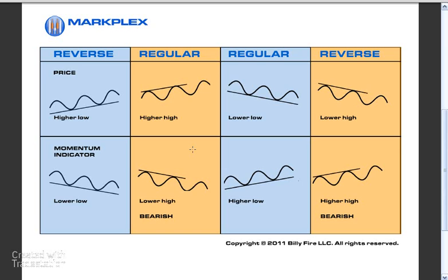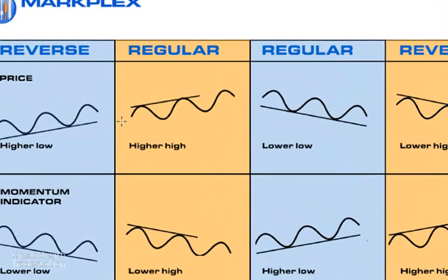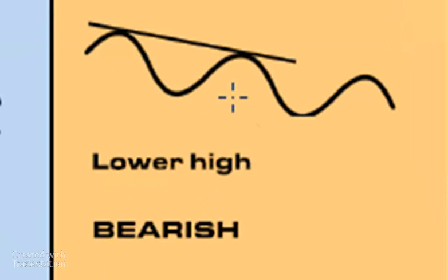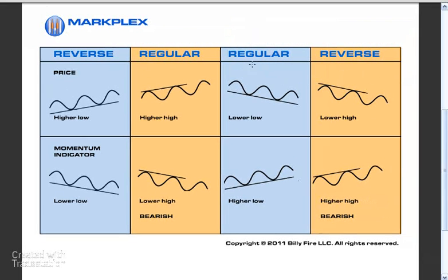First of all, just to explain what I mean by reverse or hidden, let's look at this graphic which I've created and which you can download from markplex.com. Regular divergences would be something like you get a higher high in price and a lower high in a momentum indicator, which in our case is the CCI.